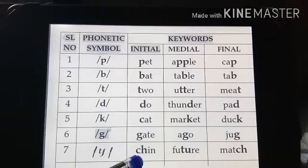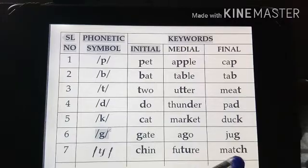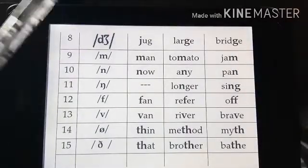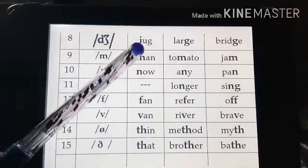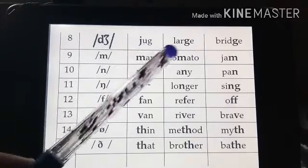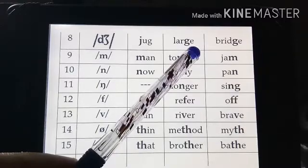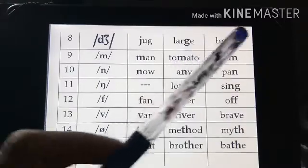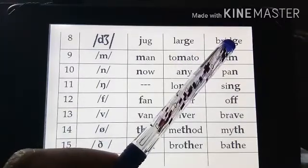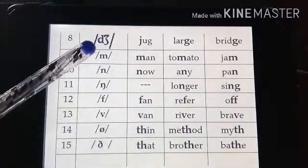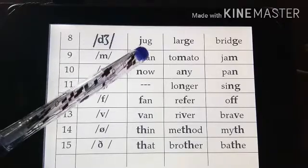This is /ch/. We can see this sound in 'chin' — /ch/ is initial. In 'match' — /ch/ is in the middle. Next we move on to the eighth one, which is /j/. For example, 'jug' — /j/ is initial. 'Large' — /j/ is in the middle. 'Bridge' — /j/ is in the final position.